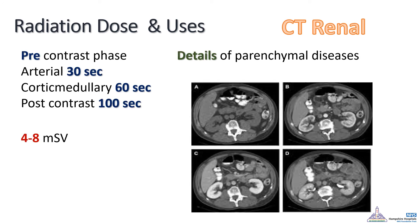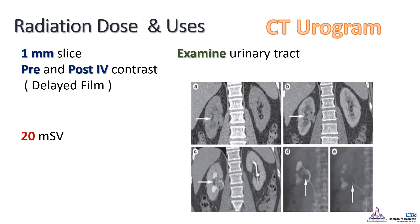The CT Renal is designed mainly to assess parenchymal disease of the kidneys and has multiple phases: a pre-contrast phase, then an arterial phase at 30 seconds after injecting contrast, a corticomedullary phase at 60 seconds, and a post-contrast phase at 100 seconds, exposing the patient to 4–8 mSv. The CT Urogram is used to assess the urinary tract. It is a 1 mm slice scan with pre-contrast and delayed contrast study. Due to its small slices and double scanning, it is a high-exposure scan, leading to an average 20 mSv radiation exposure.